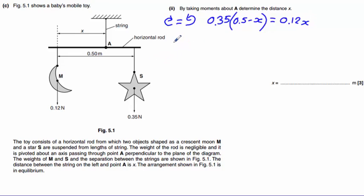Now let's expand out our bracket. So we get 0.175 take away 0.35x.